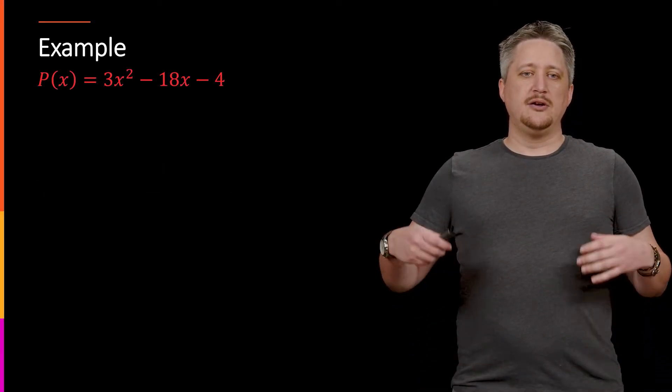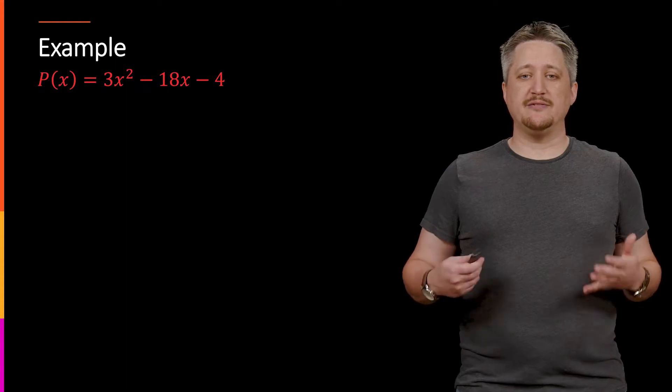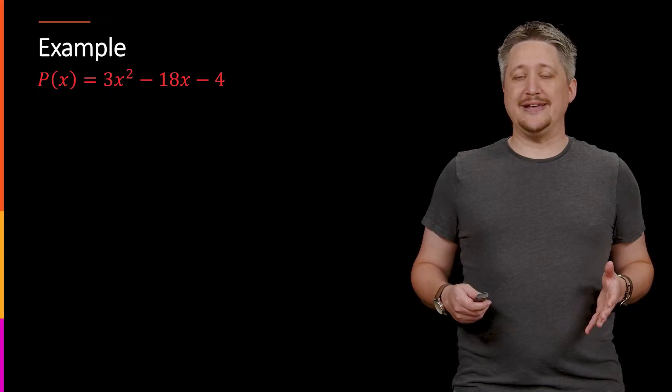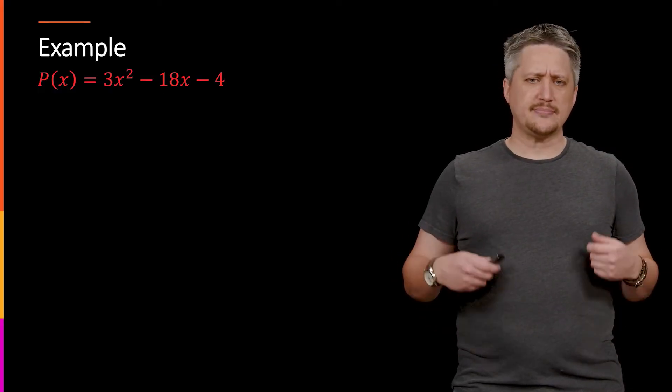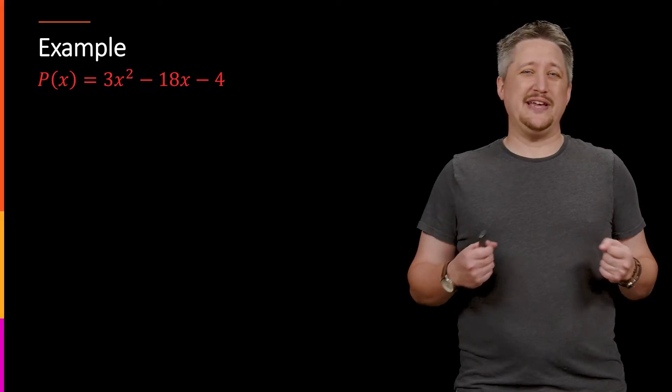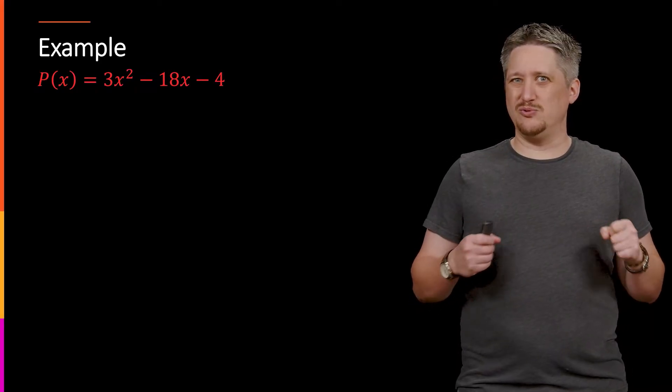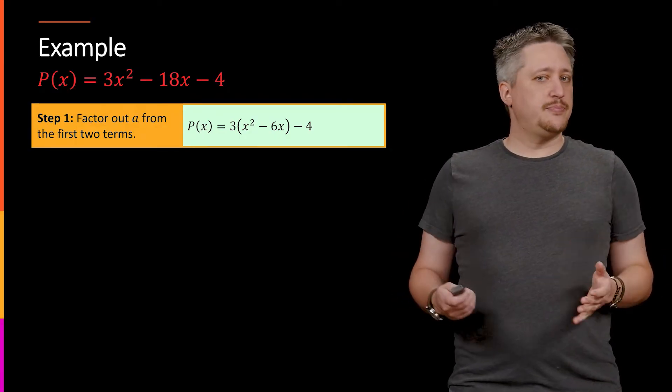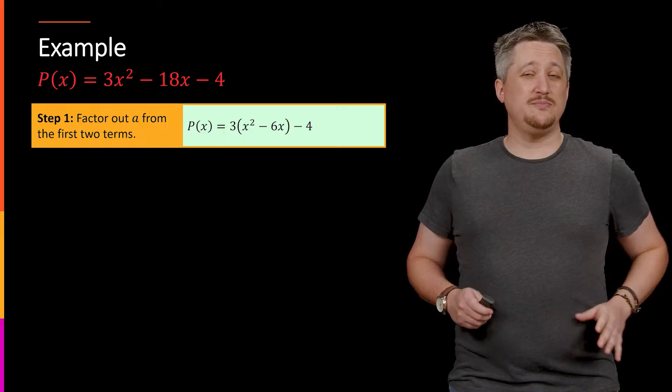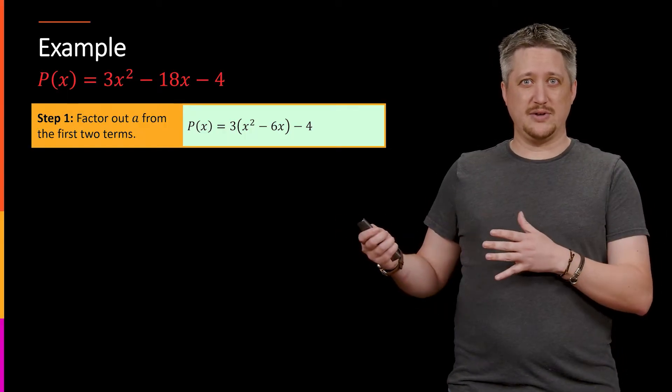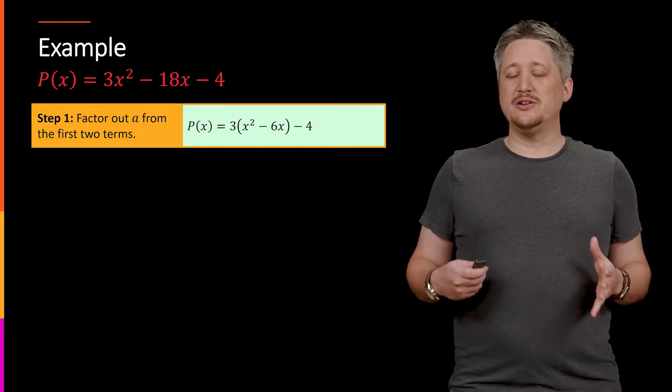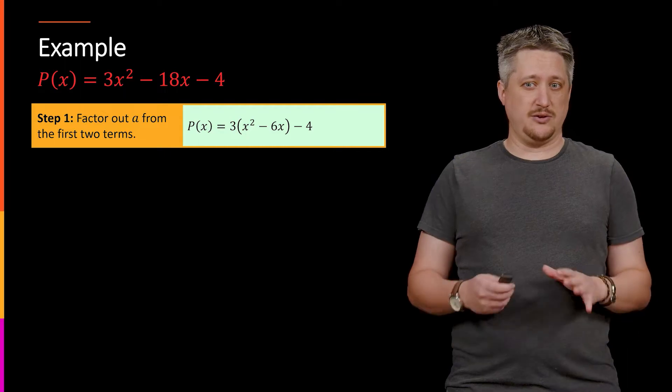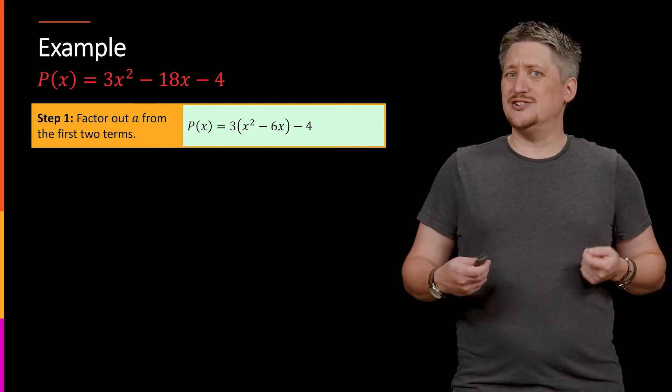Looking at an example, we have this 3x² - 18x - 4. The goal here is to get it rewritten in that special format. The first thing that we want to do is get rid of the a term because the a term throws everything off. So the first step, factor out that a. I'm going to factor out a 3, but it turns out I don't need to worry about the constant because our format has the constant outside the parentheses anyway. So I'm only going to do it from the first two. If you want to do it from all three, you can. It'll work fine either way. It's just usually easier to do it this way.